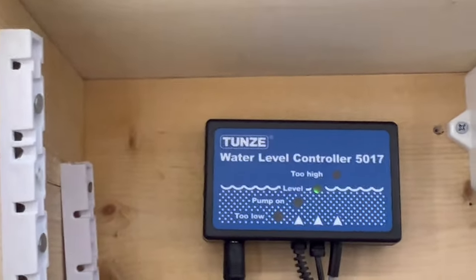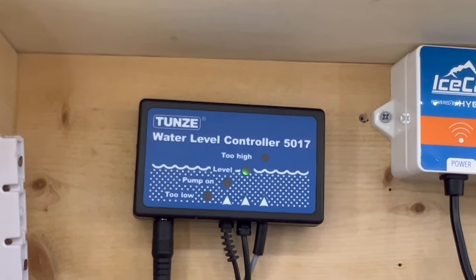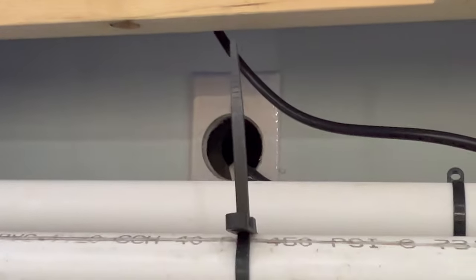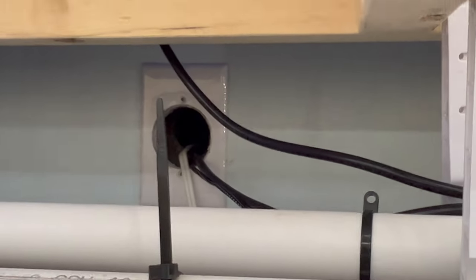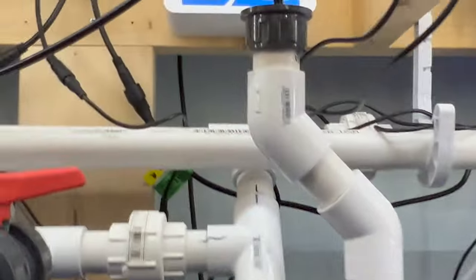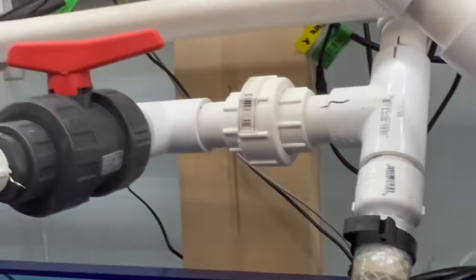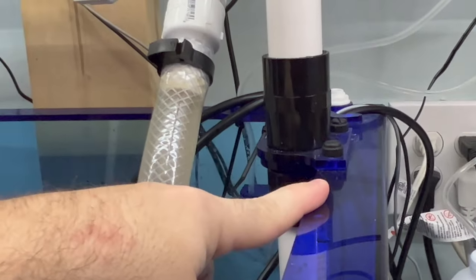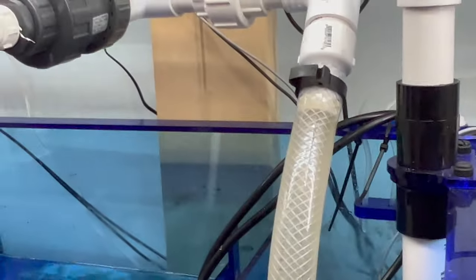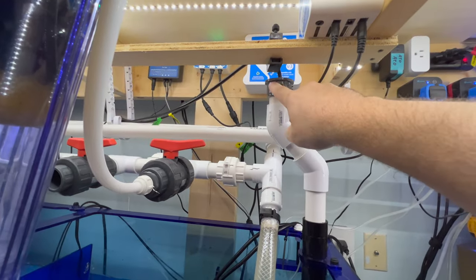And one last thing, I do have my Tunze 5017 ATO and I have my ATO reservoir on the other side of this wall. The hose comes and runs over and because it's a 45 gallon brute can, I have to have this mounted up high. If I mounted my ATO output hose low, what would happen is it would siphon down. So I had to have this higher.